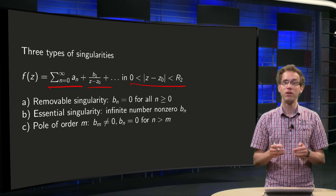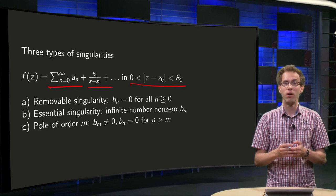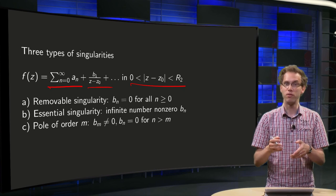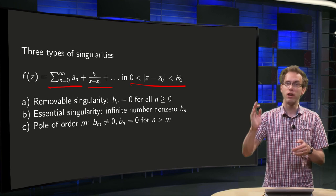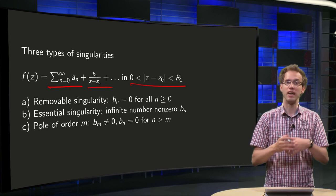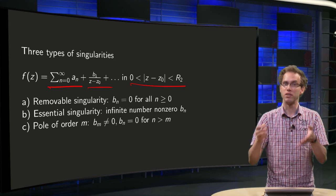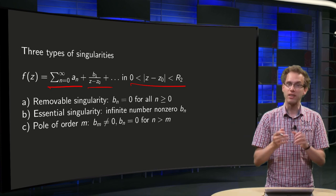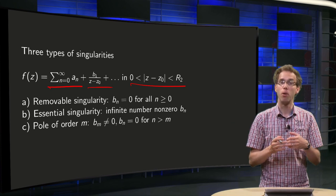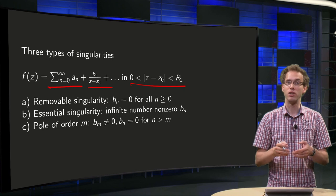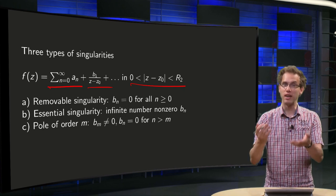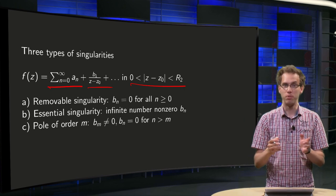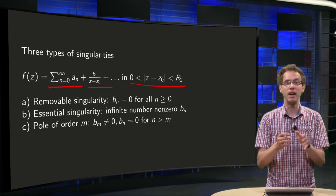Or in between, you have a finite number of bₙ's: b₁ over (z − z₀) plus b₂ over (z − z₀)², some of them non-zero, until a highest one — say b₁₀ over (z − z₀)¹⁰ — and all the other terms zero. In that case you have what's called a pole of order 10, meaning b₁₀ is non-zero, b₁₁ etc. are all zero, and what b₁ up to b₉ are is not so relevant.